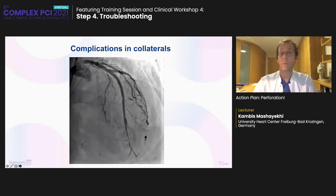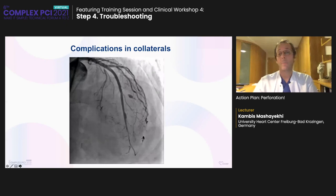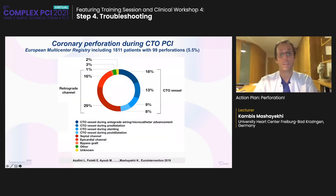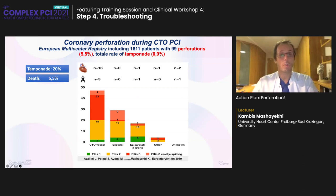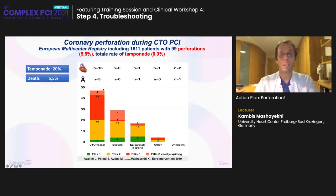During CTO-PCI, perforations occur in about 5.5% in a European collective of 1,800 CTO-PCIs — half based on retrograde approach, half on CTO vessel ruptures. The total tamponade rate was 0.9%, meaning about 20% of perforations lead to tamponade, and 5% to death. Interestingly, perforation led to death in three cases based on the CTO vessel site and only one based on the epicardial site. The US Open CTO group analyzed 1,000 patients retrospectively — perforation rate was slightly higher at 8.9%, tamponade rate 1.1%, with 20% of tamponades resulting in death.